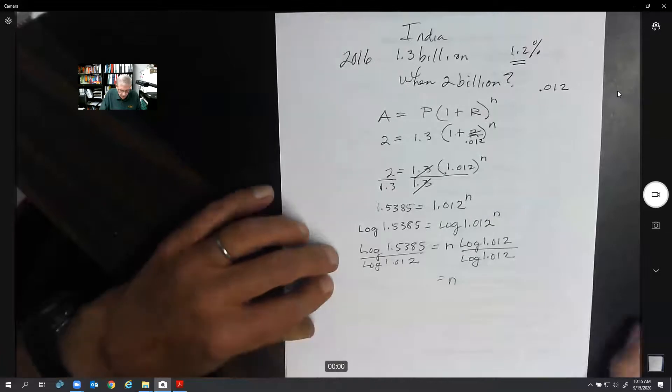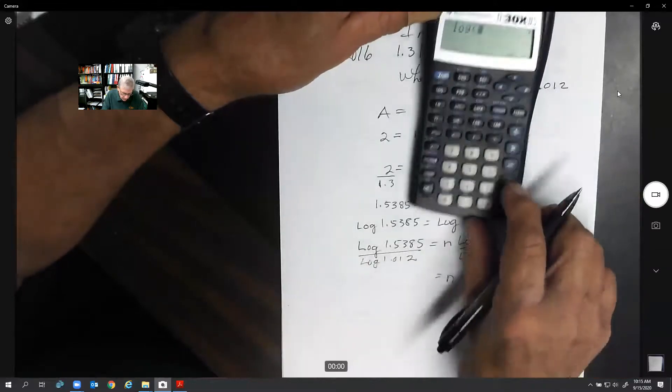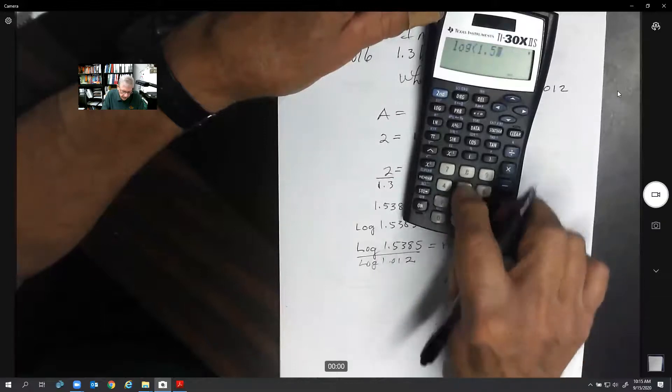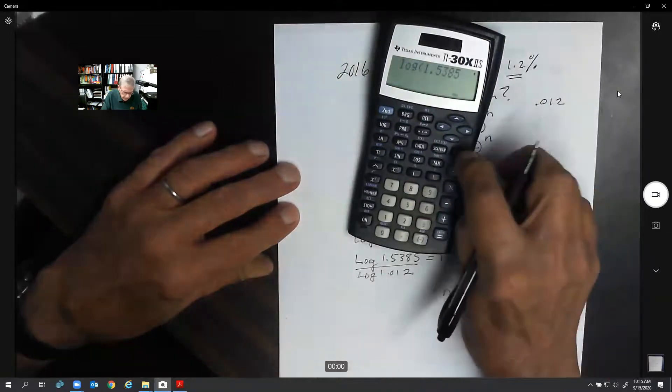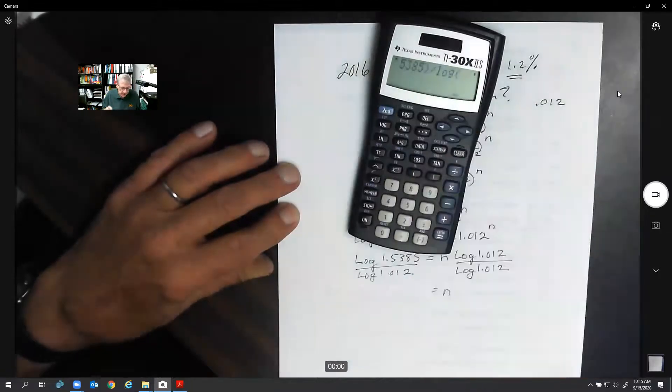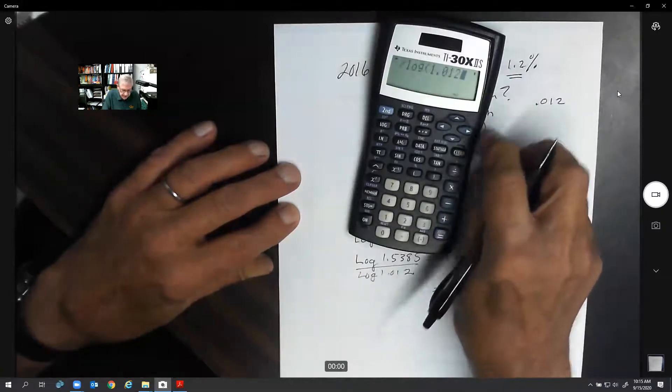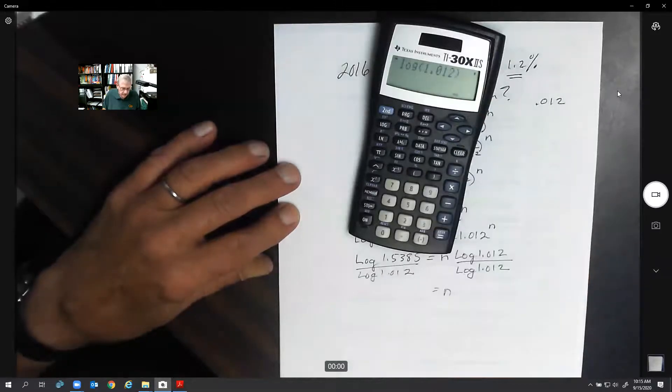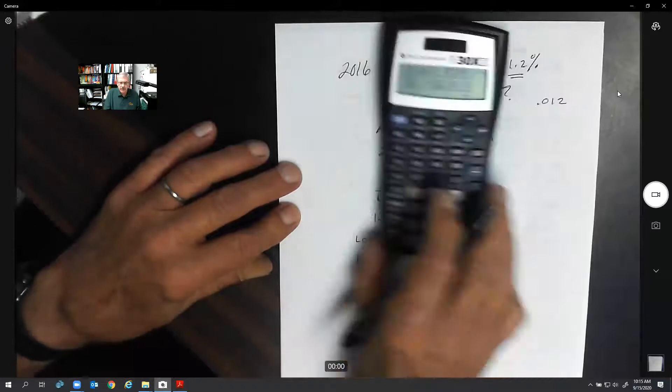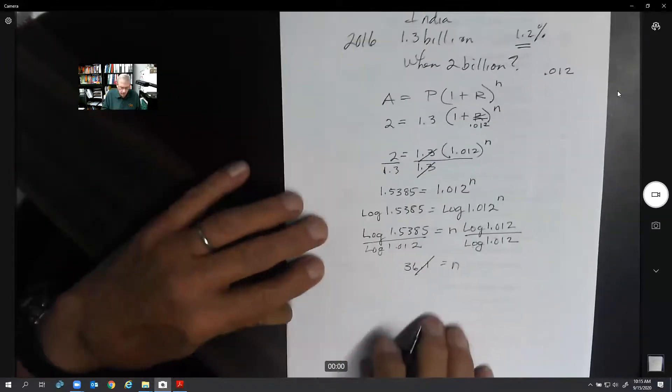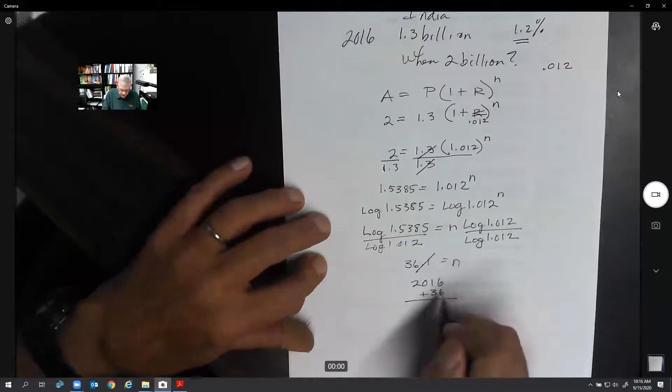That should give me n. So I'm going to calculate that out. I want log 1.5385 parentheses divide log. Make sure you put that in front. 1.012 and parentheses. Equals 36.1. So let's just call it 36. 36 years. But they want to know the exact year. So we're going to take our year 2016. We're going to add 36 to it. And this will give me the year 2052.